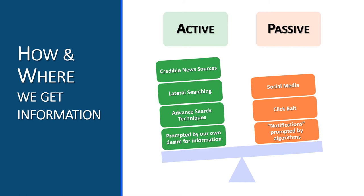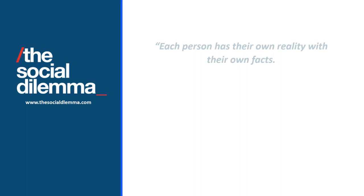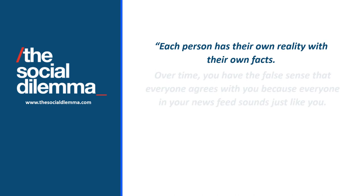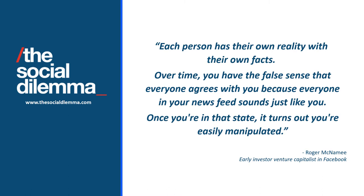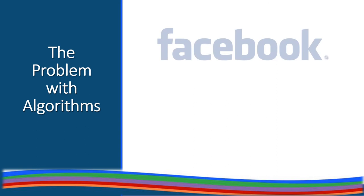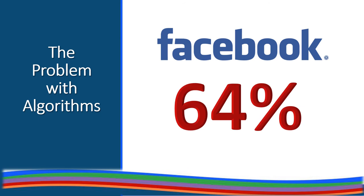Are you relying on credible news sources or unverified information you find on social media? Verifying information, especially information that you find online, is vital. As Roger McNamee stated, each person has their own reality with their own facts. Over time, you have the false sense that everyone agrees with you because everyone in your newsfeed sounds just like you. Once you're in that state, it turns out you're easily manipulated. The problem is, most of us do not even recognize that we are being manipulated. In 2018, Facebook reported that 64% of the people who joined extremist groups on Facebook did so because Facebook's own internal algorithms steered them towards those groups. It is important to be aware not only of where we are getting our information, but how and why that information is being directed towards us.